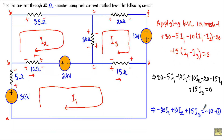If I simplify this equation I will get: 30 − 5·I1 − 10·I1 + 10·I2 − 20 − 15·I1 + 15·I3 = 0. Collecting terms: −30·I1 + 10·I2 + 15·I3 = −10. Let's say this is our equation number 1.